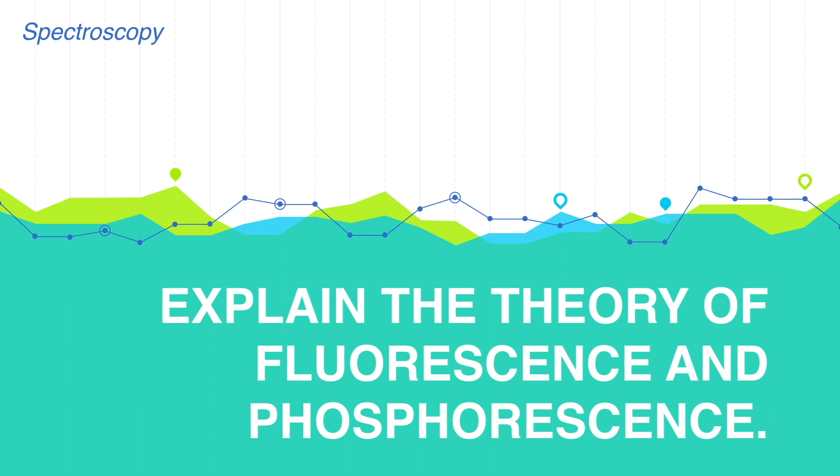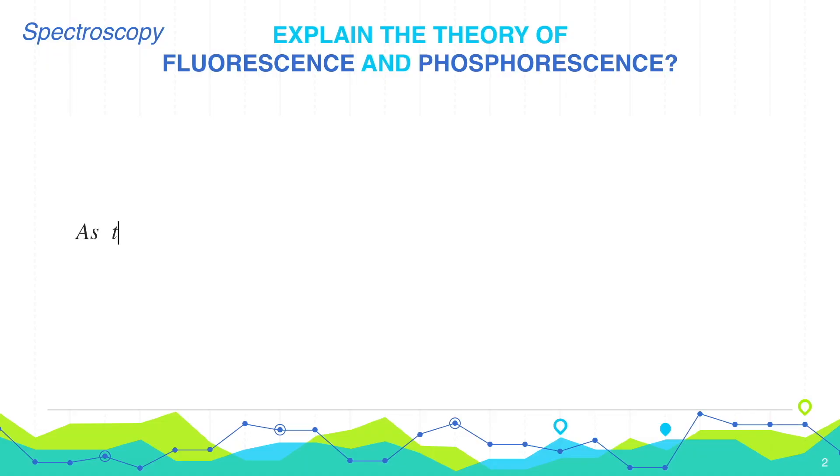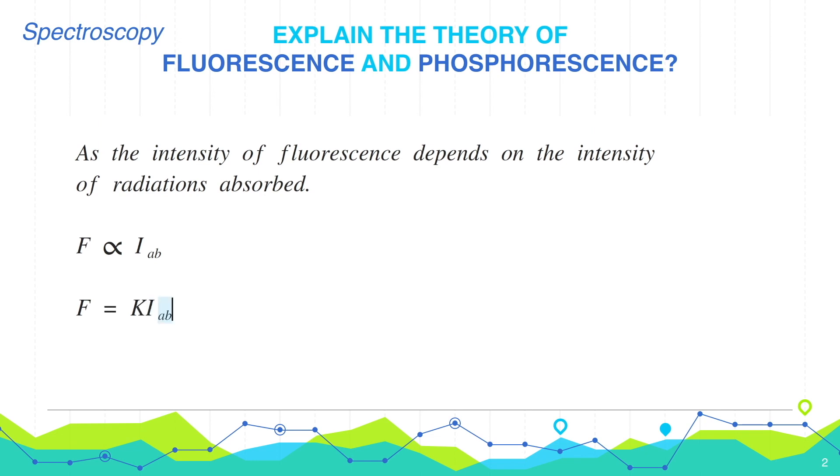Explain the theory of fluorescence and phosphorescence. As the intensity of fluorescence depends on the intensity of radiation absorbed, fluorescence F is proportional to intensity absorbed.